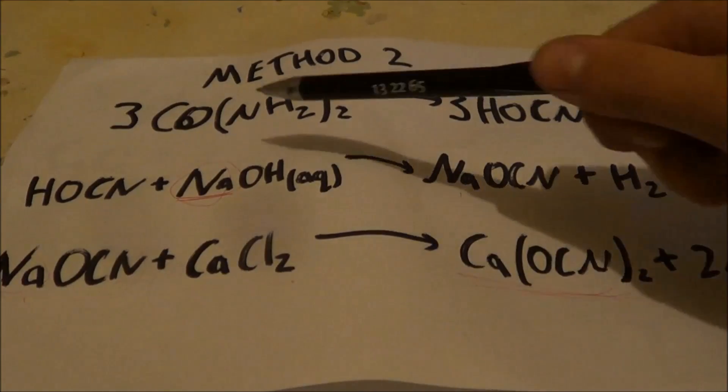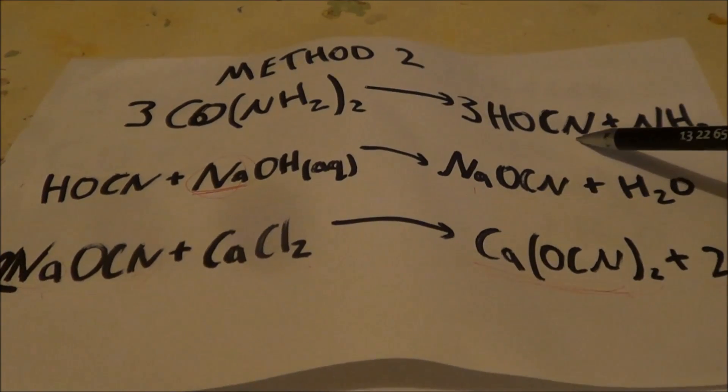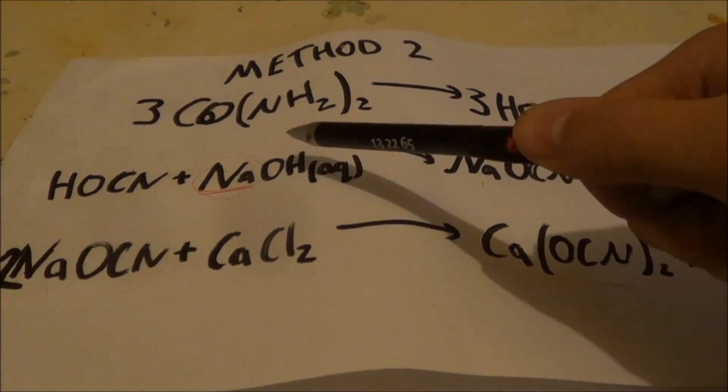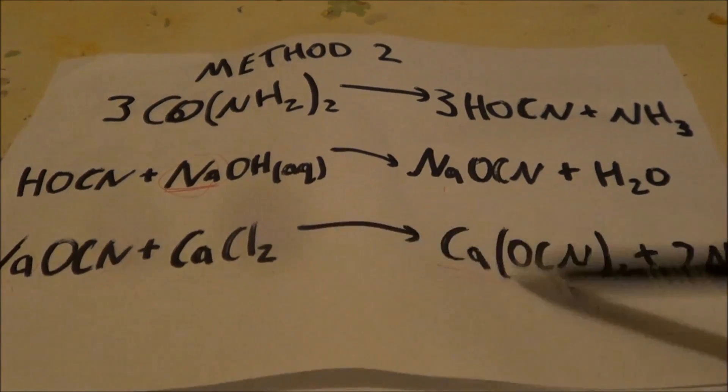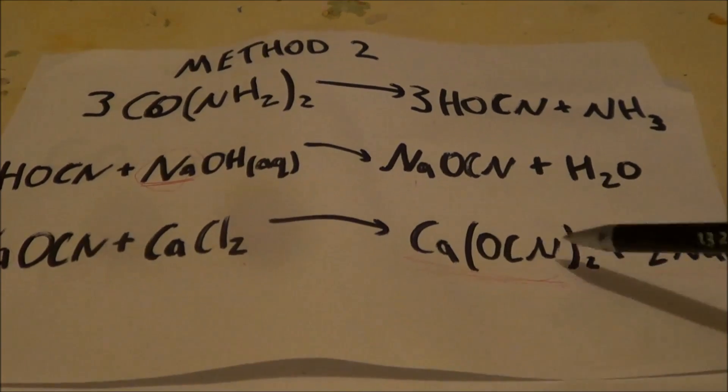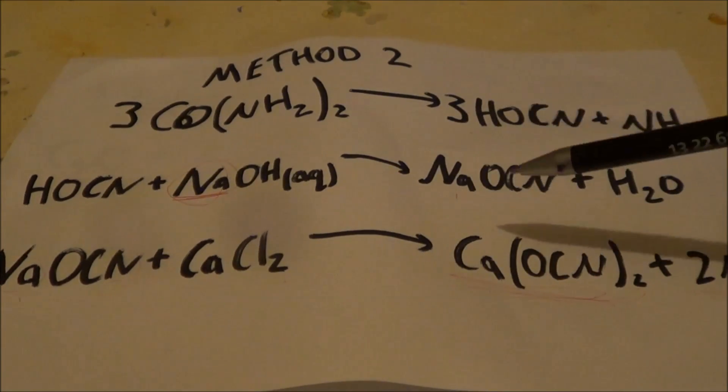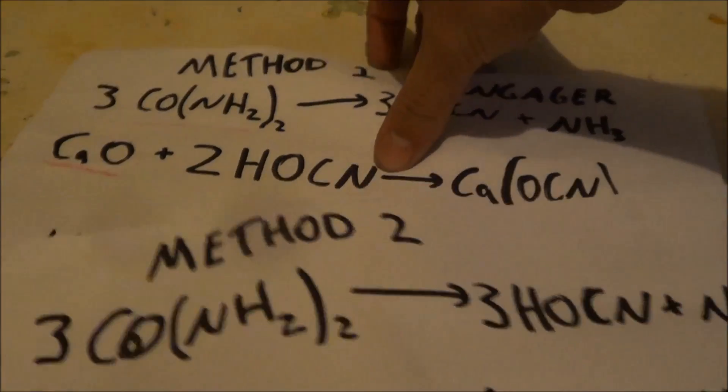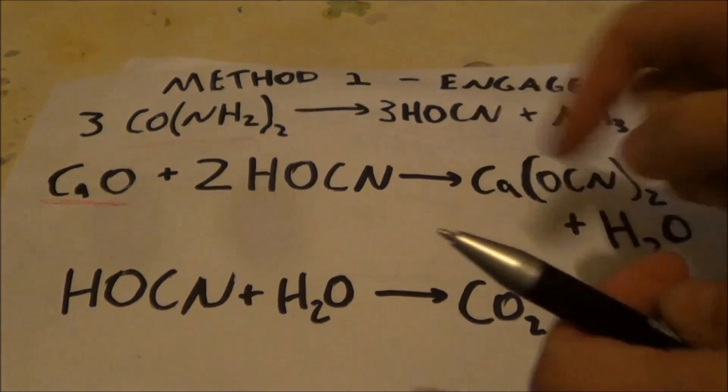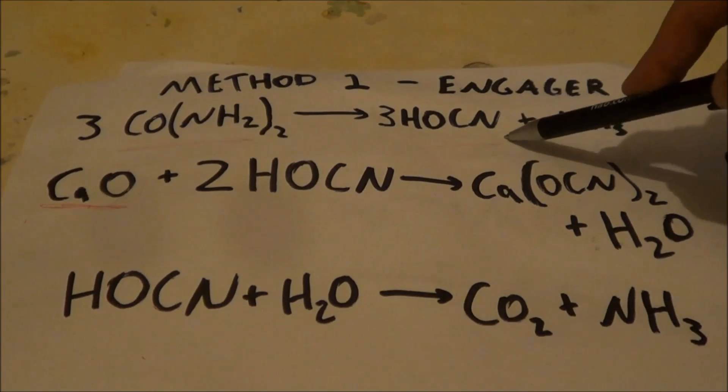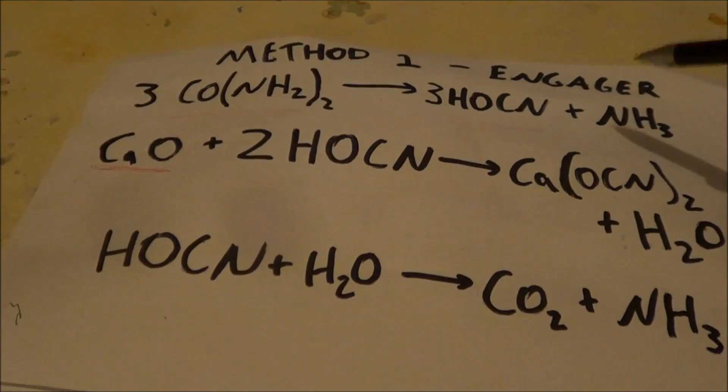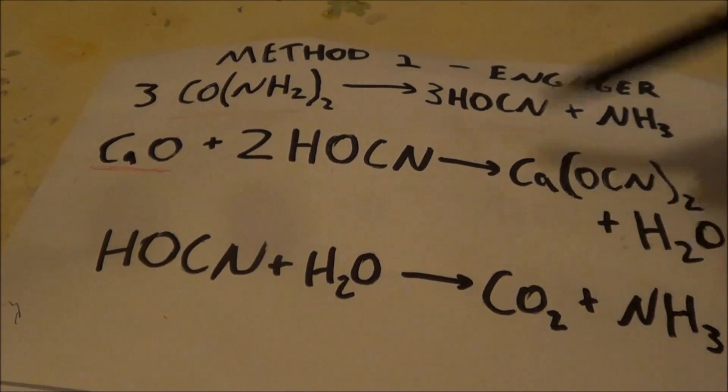There's another method which also works, which involves heating this urea up to form the cyanic acid and then extracting that cyanic acid with sodium hydroxide solution to form sodium cyanate and then using the aqueous step to make calcium cyanate. Now this first step has a disadvantage that heating up the urea to form decomposition products will form some other decomposition products and at no point are they purified out.